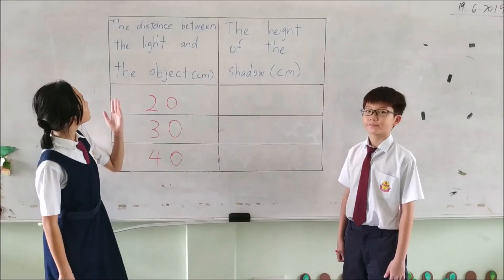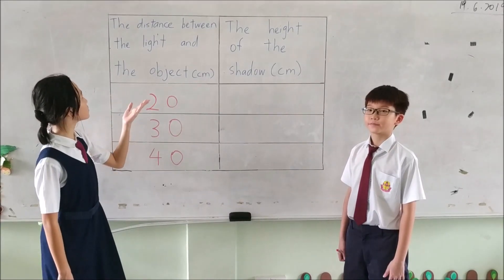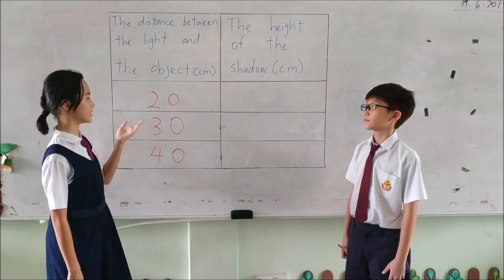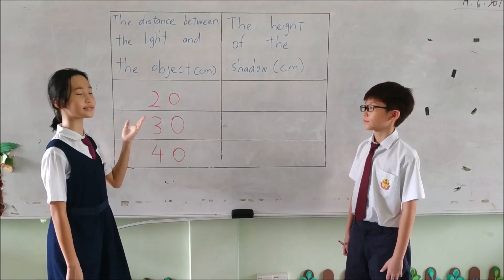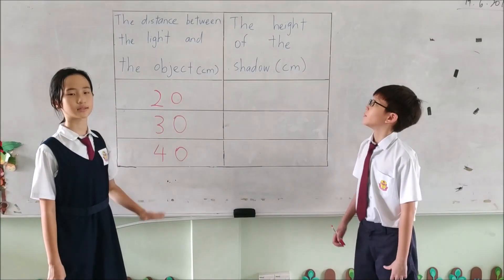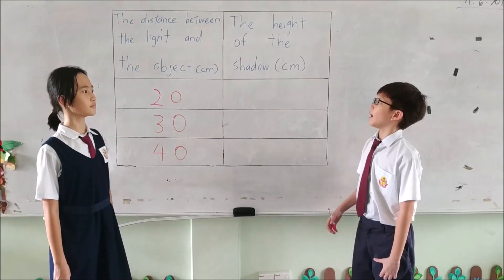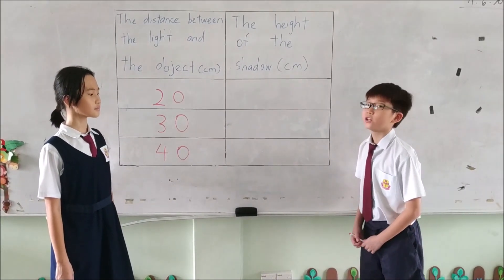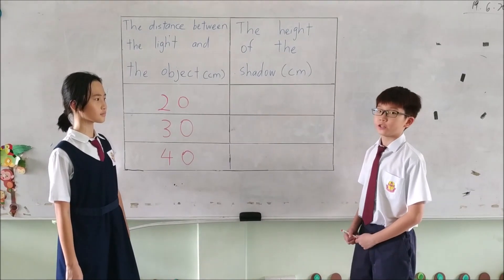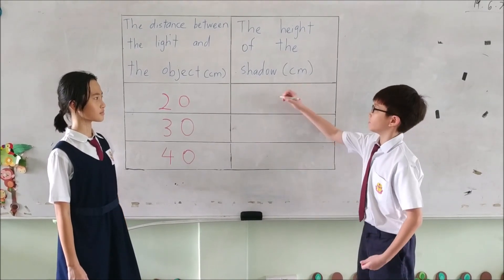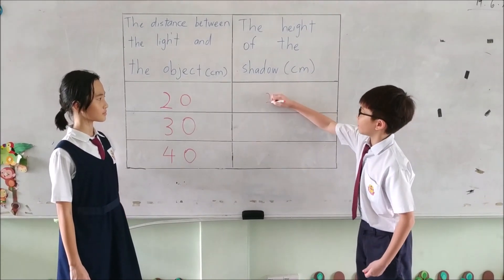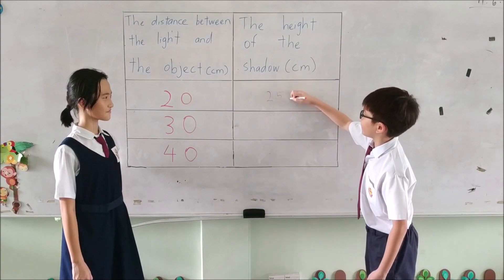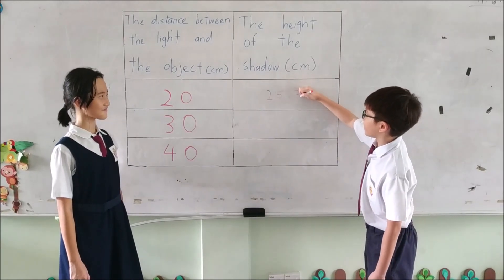The distance between the light and the object is 27cm. Then the height of the shadow is 25.3cm.